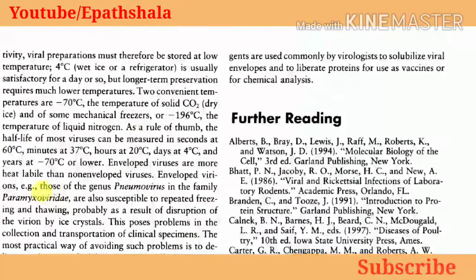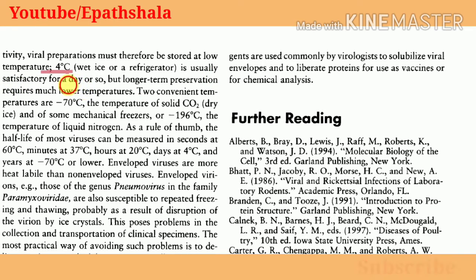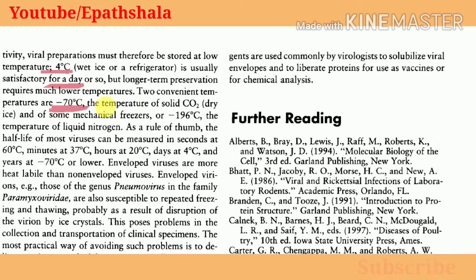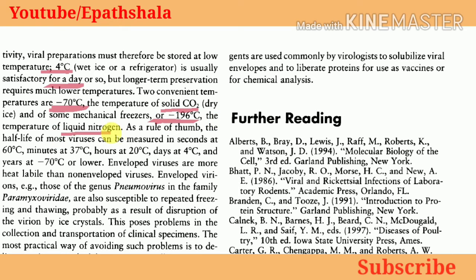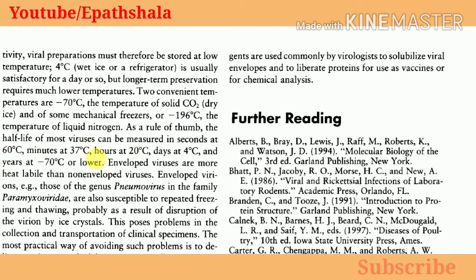To preserve infectivity, viral preparations must therefore be stored at low temperature — usually satisfactory for a day — but longer term preservation requires much lower temperatures, convenient temperatures being –70°C (the temperature of solid carbon dioxide, i.e. dry ice) and –196°C (the temperature of liquid nitrogen). As a rule of thumb, the half-life of most viruses can be measured in seconds at 60°C, minutes at 37°C, hours at 20°C, days at 4°C, and years at –70°C or lower.